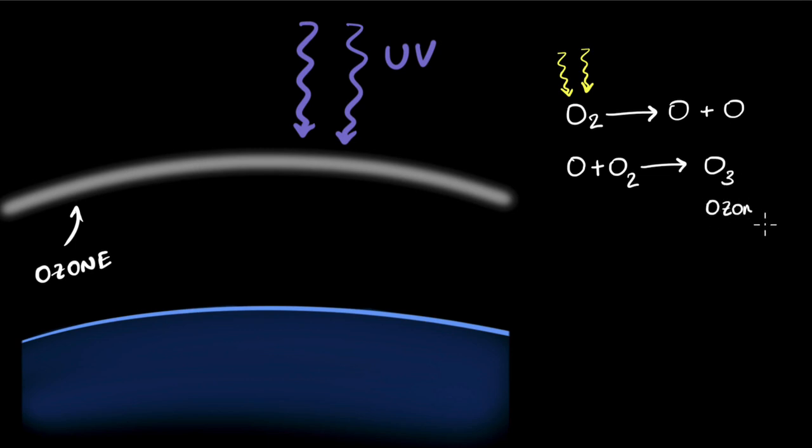So ozone is basically a lot of O3 molecules high up in the air that forms a blanket which shields us from the UV radiation.